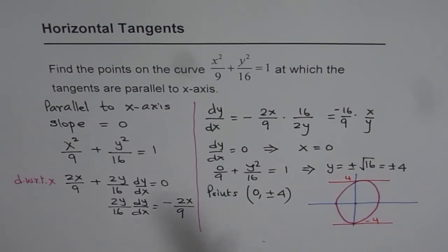So if you sketch the function, it's very obvious that the horizontal tangent should be at these points. So these are the vertices of your ellipse.